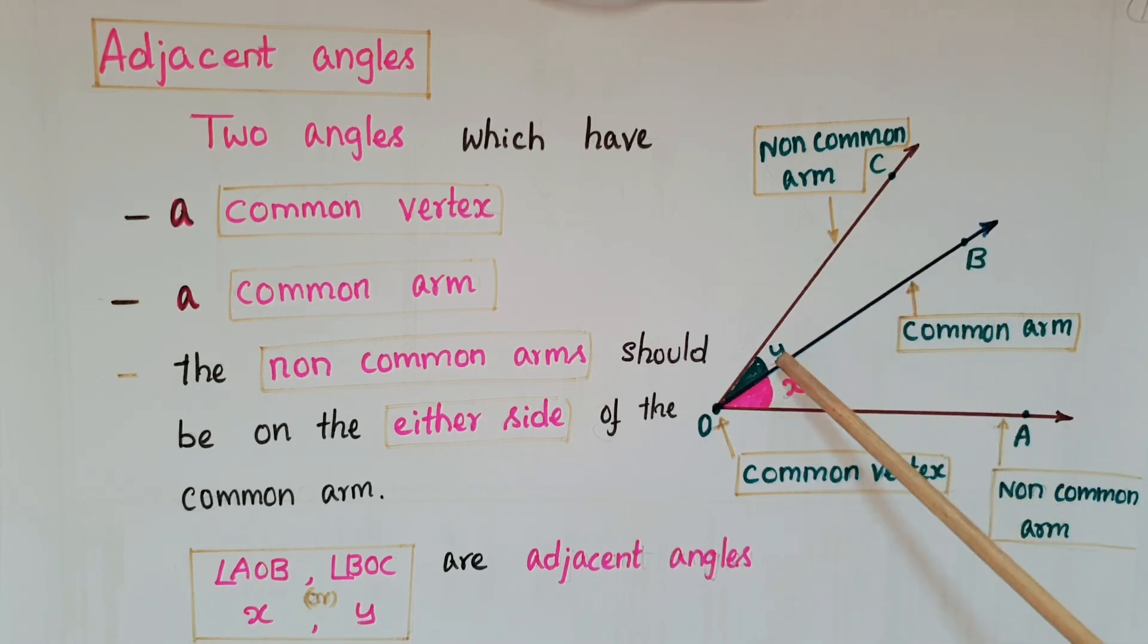So these two angles X and Y are called adjacent angles. Two angles which have a common vertex and common arm, and the non-common arms should be on either side of the common arm, are called adjacent angles.